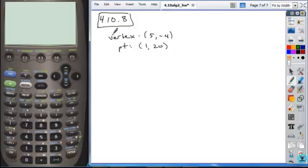The fact that this first set of problems is giving you a vertex means you're probably going to want to use the vertex form. And if you recall, vertex form is y equals a times the quantity x minus h squared plus k, where h k is your vertex.